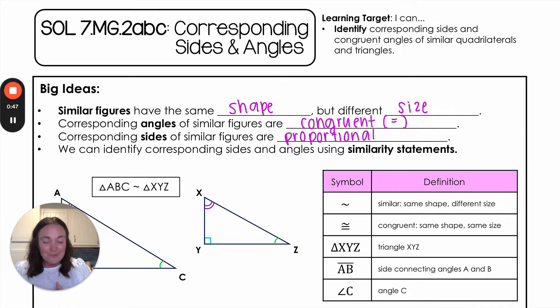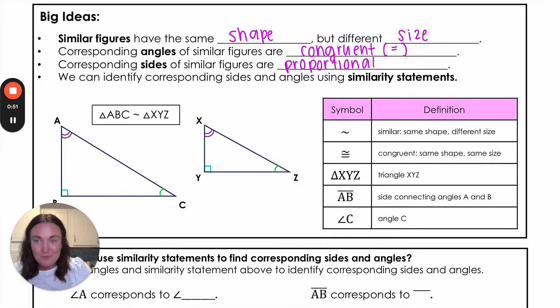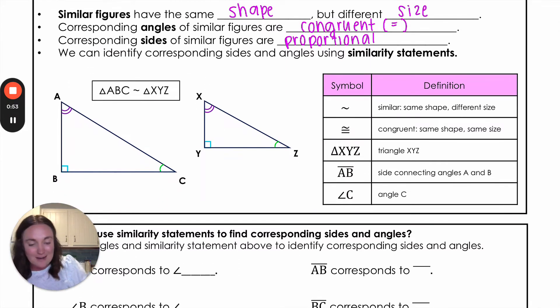We can identify corresponding sides and angles using something called a similarity statement, which we have an example of right here. This right here is a similarity statement and I would read this as triangle ABC is similar to triangle XYZ.